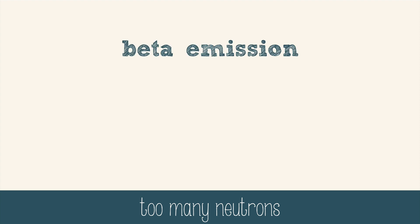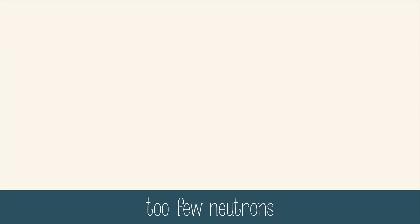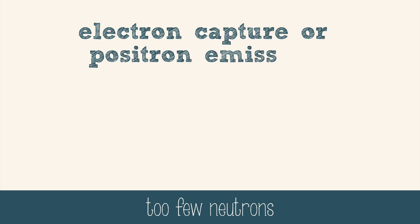If there are too many neutrons, the nucleus will decay by beta emission, where a neutron turns into a proton and an electron — the beta particle. If there are too few neutrons, there are two ways to solve the problem: electron capture or positron emission.